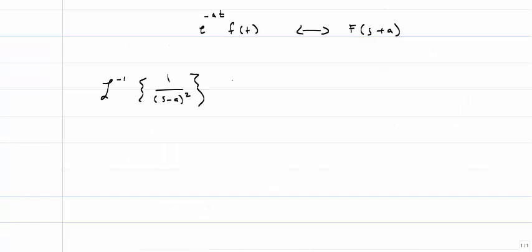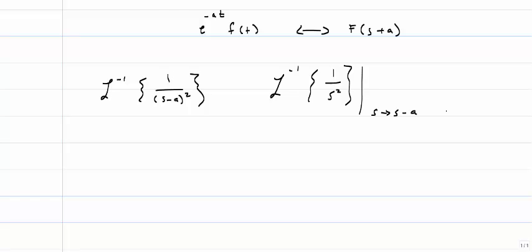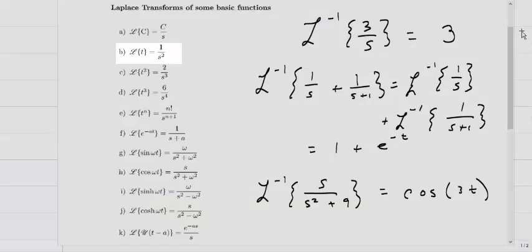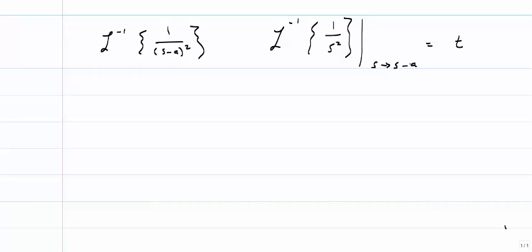Here's where the shifting property is helpful. For the inverse Laplace of 1 over (s − a)², it looks like the inverse Laplace of 1/s², except s is replaced by s − a. The inverse Laplace of 1/s² is simply t. Now I account for the shift: multiply by e^(−at), but since a is actually negative here, it's e to the positive at. So the inverse Laplace of 1 over (s − a)² is t·e^(at). I could have done this with partial fractions, but recognizing the shift is much less work.